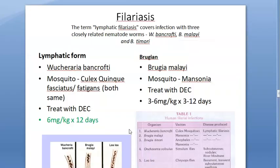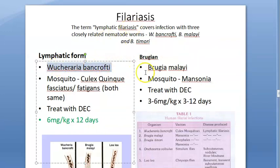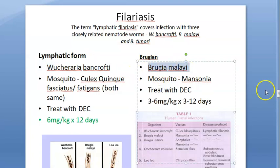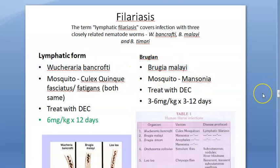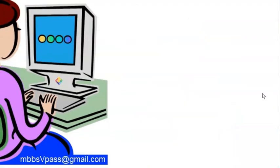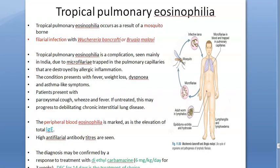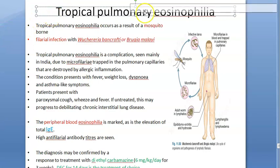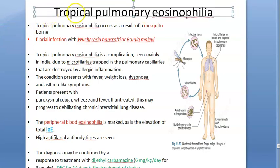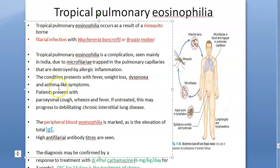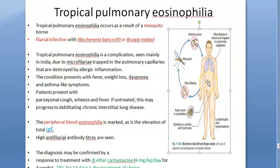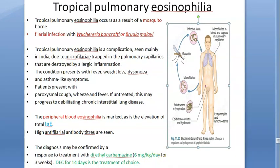Lymphatic filariasis can be caused by Wuchereria bancrofti, Brugia malai, and also Brugia timori, among others. In this video, we focused on tropical pulmonary eosinophilia and also covered general features of Wuchereria bancrofti.